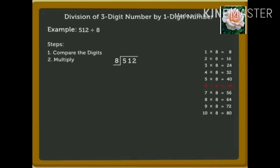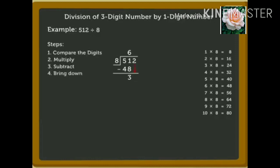Write 6 in the tens place in the quotient and the number 48 under 51. Now, subtract 48 from 51, which equals 3. Next, we need to compare 3 and 8. Since 3 is smaller than 8, we bring down the ones digit, that is 2, and get the number 32.